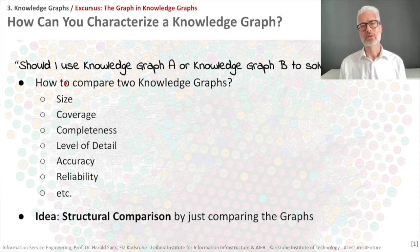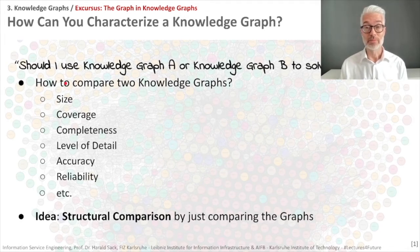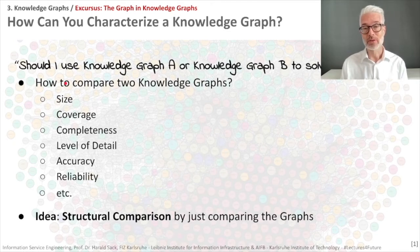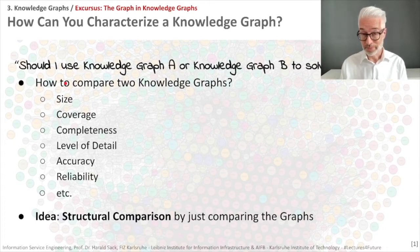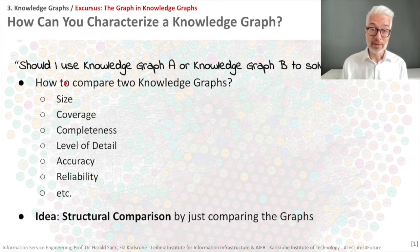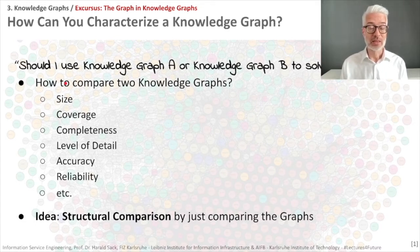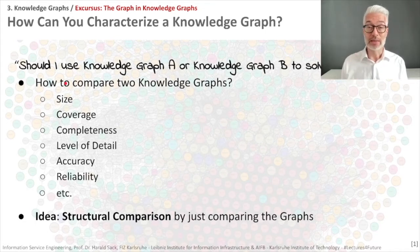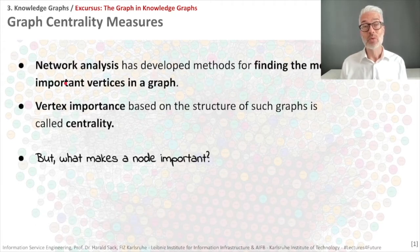Now let's apply this in the knowledge graph context. Imagine you need to decide whether to use knowledge graph A or knowledge graph B — for example, DBpedia or Wikidata — to solve a specific problem. We need to compare these knowledge graphs. The conditions are determined by the application. We can compare by structural comparison, looking at size, coverage, completeness, level of detail, accuracy, reliability, and other criteria. If we focus only on structural aspects and not content, we need to do network analysis.